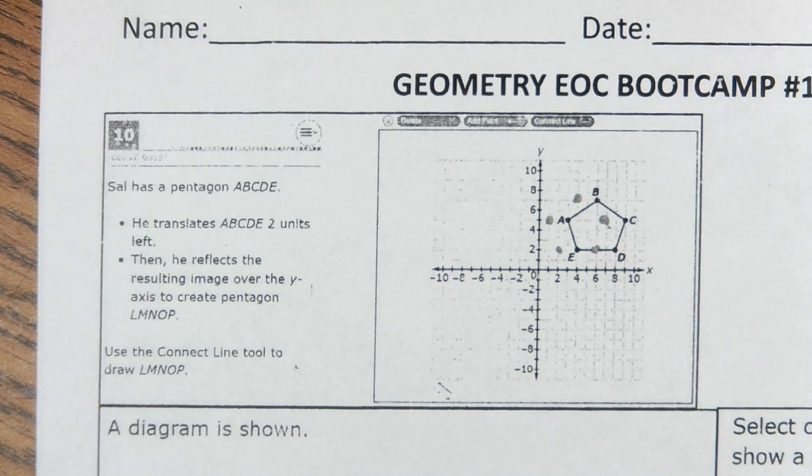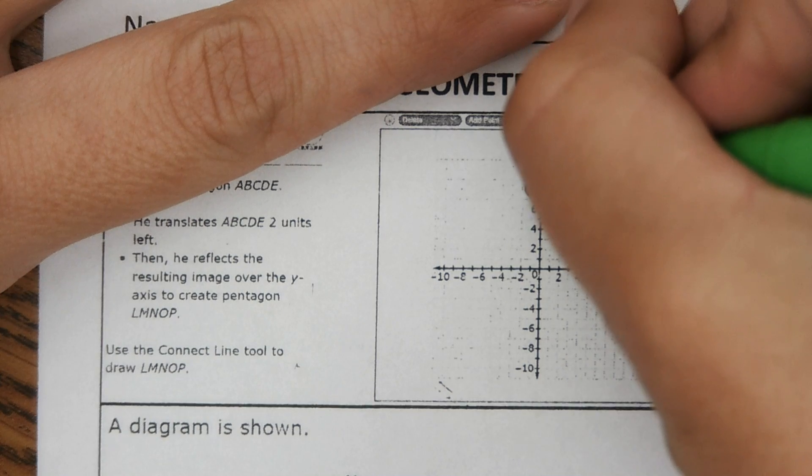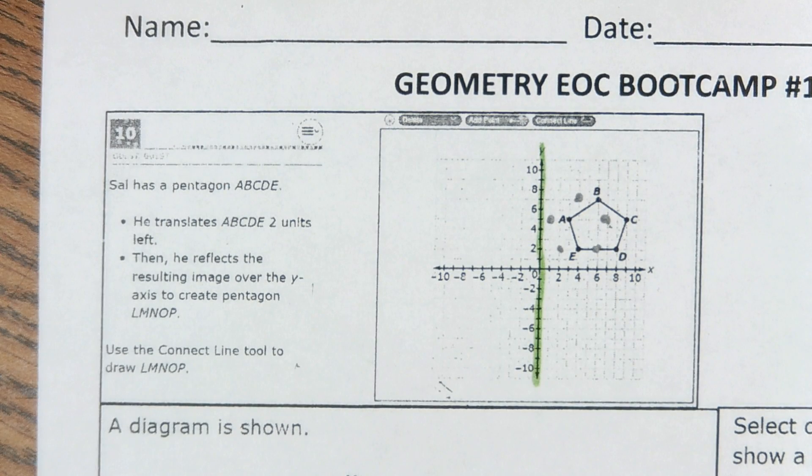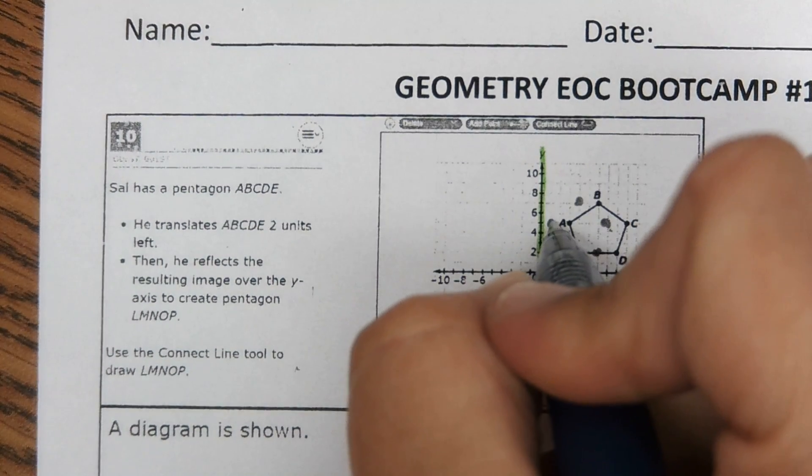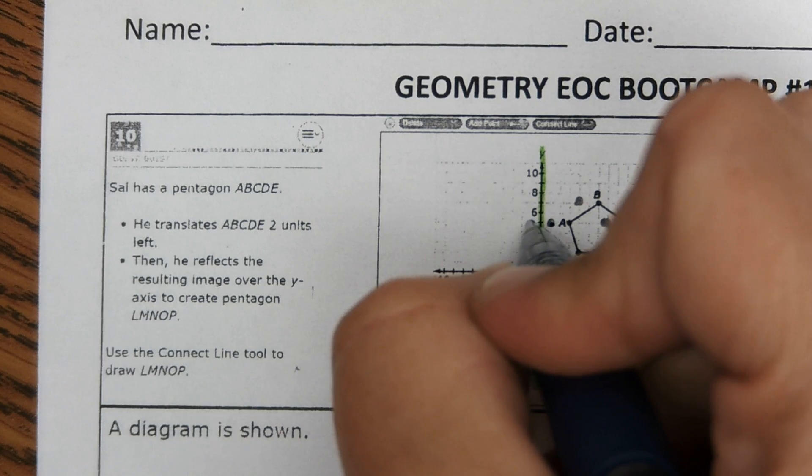Then it says to reflect that image over the y-axis. So this would be the y-axis right here. And so those points we're reflecting over the y-axis, so it means that we are going to put these points the same distance from the y-axis on the other side.